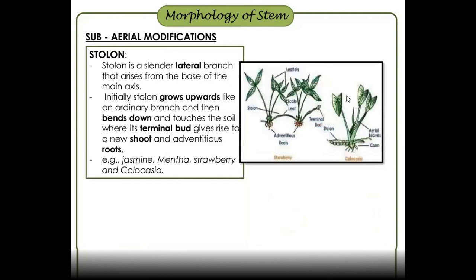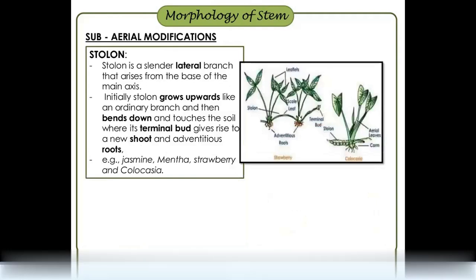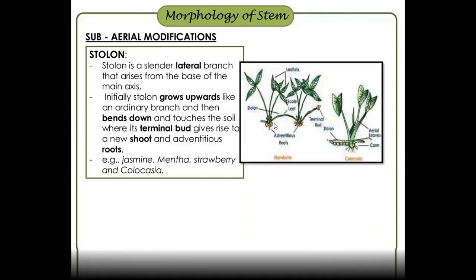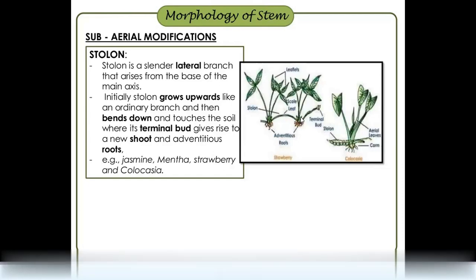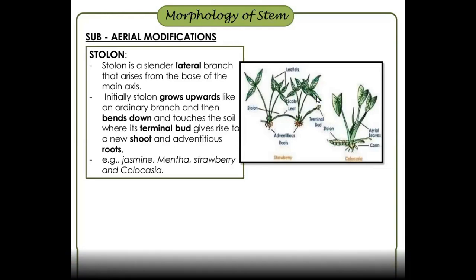Stolon is a little slender lateral branch that starts from the main axis at a little base and spreads along the ground. Examples of stolons include Mentha, jasmine, strawberry, and Colocaceae.